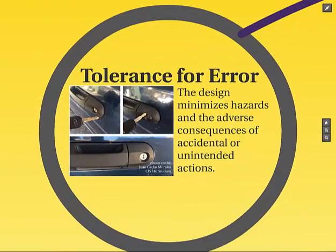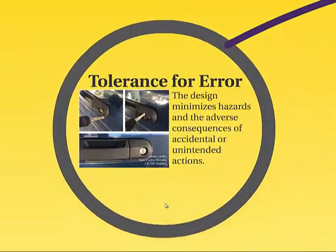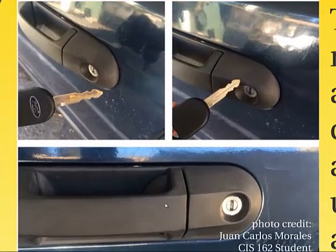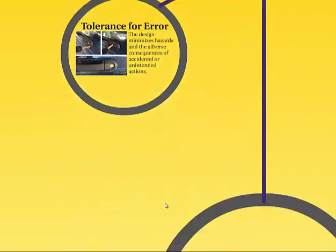Tolerance for error — and Juan Carlos Morales gets credit for this photo, a previous student. The design minimizes hazards and the adverse consequences of accidental or unintended actions. Here we see the double-sided key. A lot of keys have to have a specific vertical orientation — you have to put it in the right way for it to work. Not this key. If you put it in upside down, it will still work. That's a great example of tolerance for error.